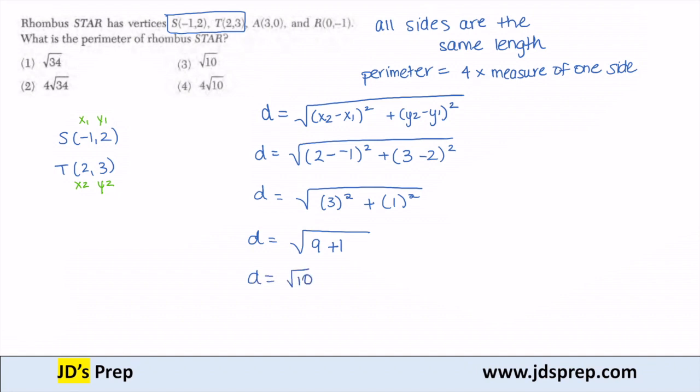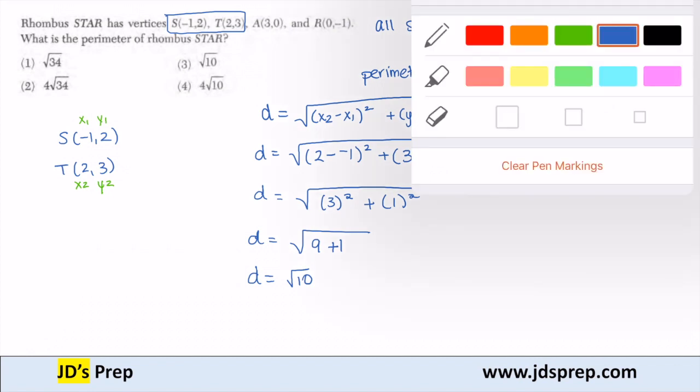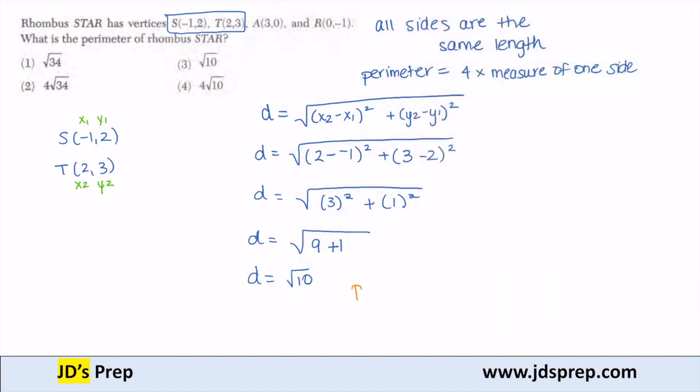So the distance between S and T is the square root of 10. Now my perimeter is 4 times the measure of one side, so the perimeter is going to be 4 times the square root of 10, which gives us option number 4 as our solution.